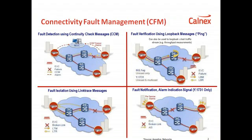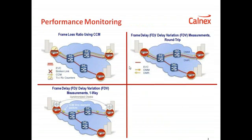Ethernet and MPLSTP OAM has a number of functionalities and features. Continuity check messages are used to check continuity. Loopback and link trace messages are used to check, locate, and verify faults. Alarm indication signals are used to report and notify faults. OAM can also perform performance monitoring — by using CCM messages and counting them, we can check for frame loss. We can also measure frame delay and delay variation, both round trip and one way, using OAM.